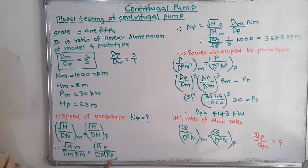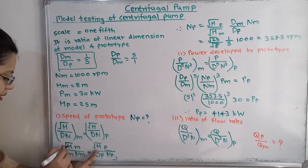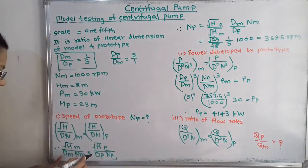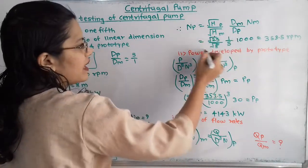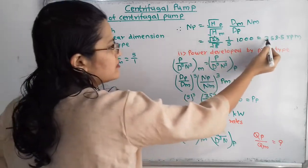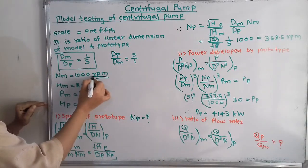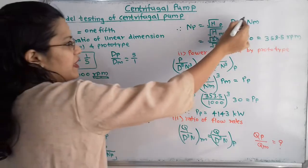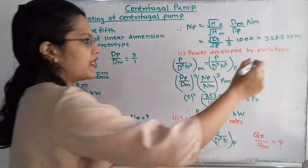Rearranging to isolate N_p, we shift terms to get: N_p = (√H_p / √H_m) × (D_m / D_p) × N_m. Substituting the values: N_p = (√25 / √8) × (1/5) × 1000 = 353.5 rpm. The unit remains rpm since N_m was in rpm.